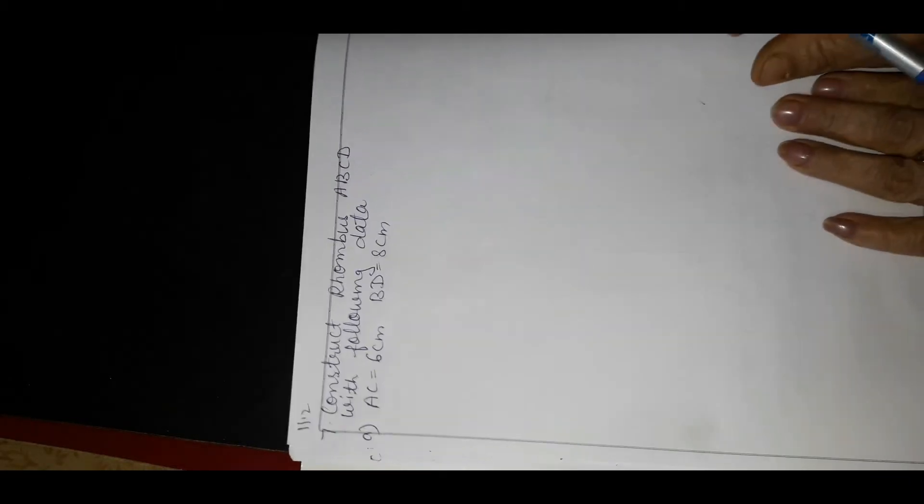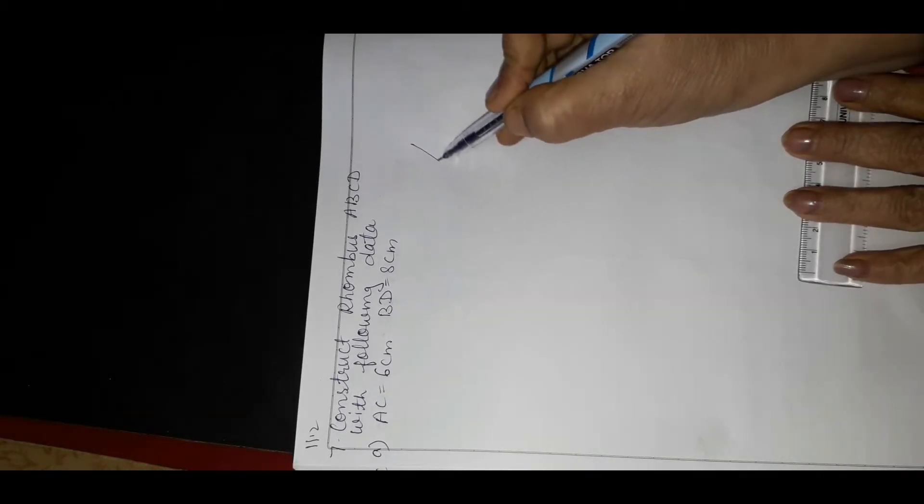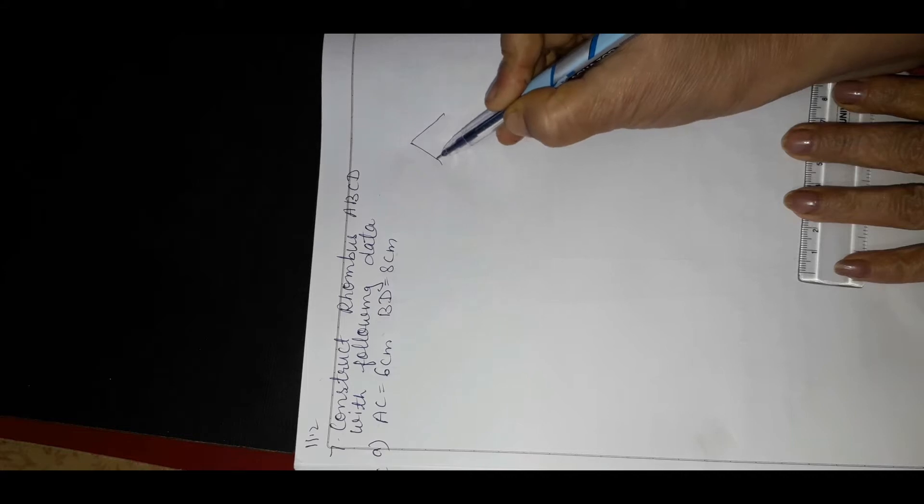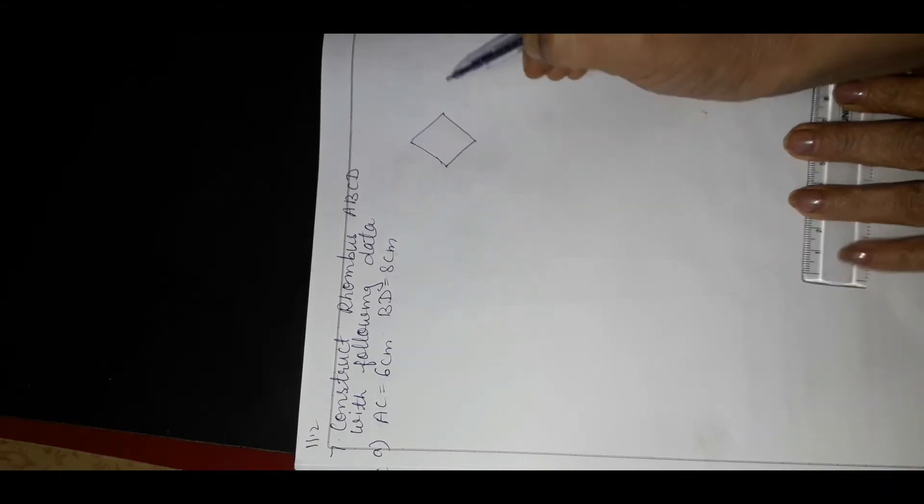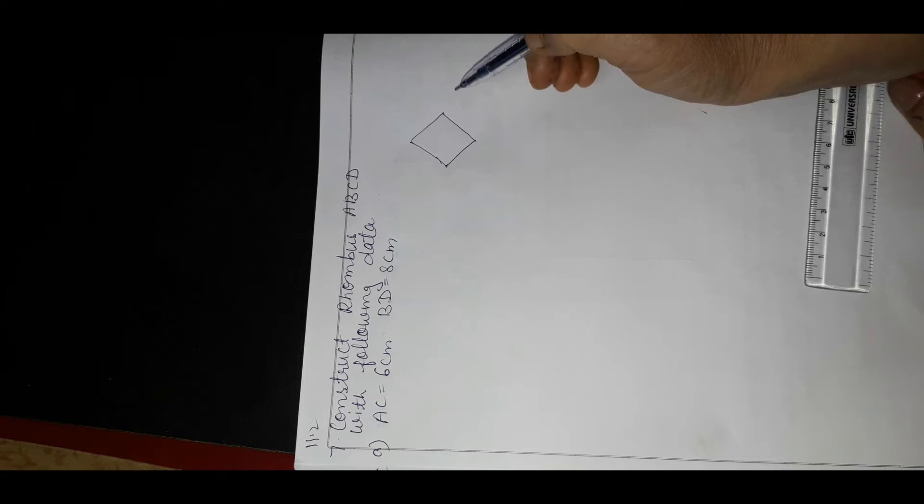Hello students, in this video we are going to learn how to construct a rhombus. A rhombus is a quadrilateral having four sides — all sides are equal, but their angles are not equal; opposite angles are equal only.